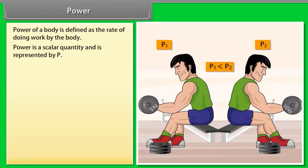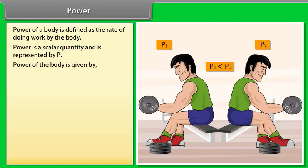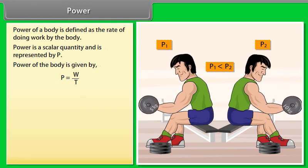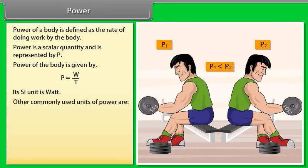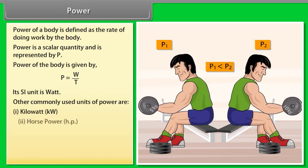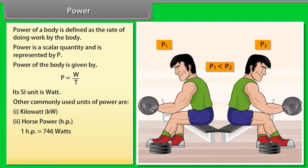Power is a scalar quantity and is represented by P. Power of a body is given by P is equal to W upon T. Its SI unit is Watt. Other commonly used units of power are kilowatt and horsepower. One horsepower is equal to 746 watts.